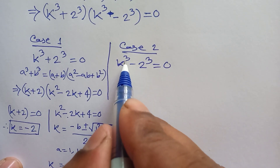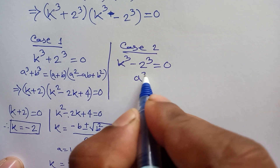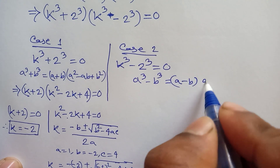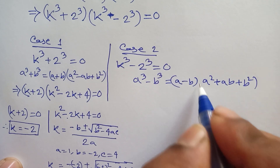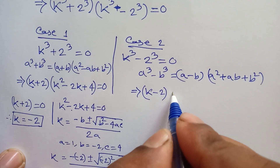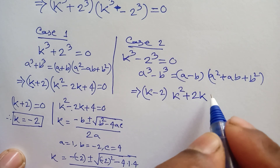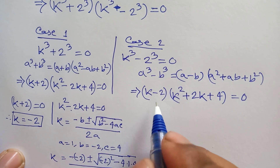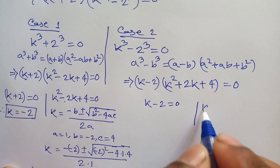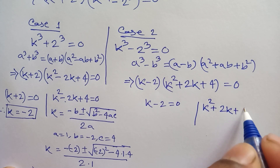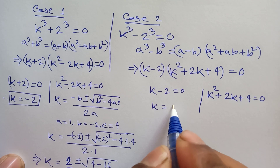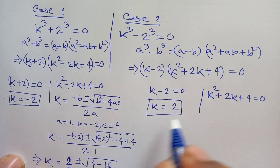For Case 2: k cubed minus 2 cubed equals 0. We apply the a cubed minus b cubed formula: a minus b times a squared plus ab plus b squared. So it becomes k minus 2, times k squared plus 2k plus 4, equals 0. From this we have two solutions: k minus 2 equals 0, giving k equals 2.